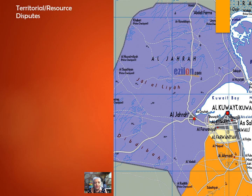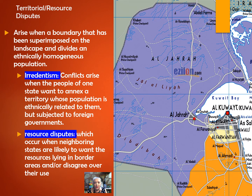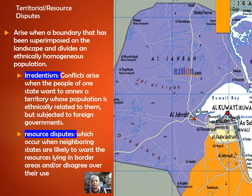Two more are territorial and resource disputes. Territorial disputes involve conflicts between states or regions over the ownership of a given area. Reasons for territorial claims include a country's desire to increase its power, a political need to divert attention from existing problems, and claimed rights to an area based on history, ethnicity, or geography. Irredentism is the conflict that arises when people of one state want to annex a territory whose population is ethnically related to them but subjected to a foreign government. This took place quite often during World War Two, especially with Hitler when he annexed Czechoslovakia and Poland, both of which had very large German populations.